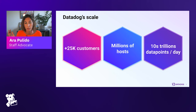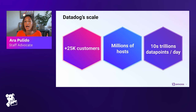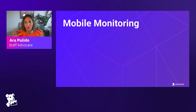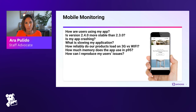Before we get started, we always like to give a few data points about the scale Datadog runs on, because some of the decisions on how we build Datadog are very related to that scale. Datadog has more than 25,000 customers. We collect a lot of telemetry from those customers — all the hosts and devices add up to millions, which translates to tens of trillions of data points ingested and processed every day. Some of them come from mobile monitoring, and we're going to explain how we build the SDKs that collect that telemetry.